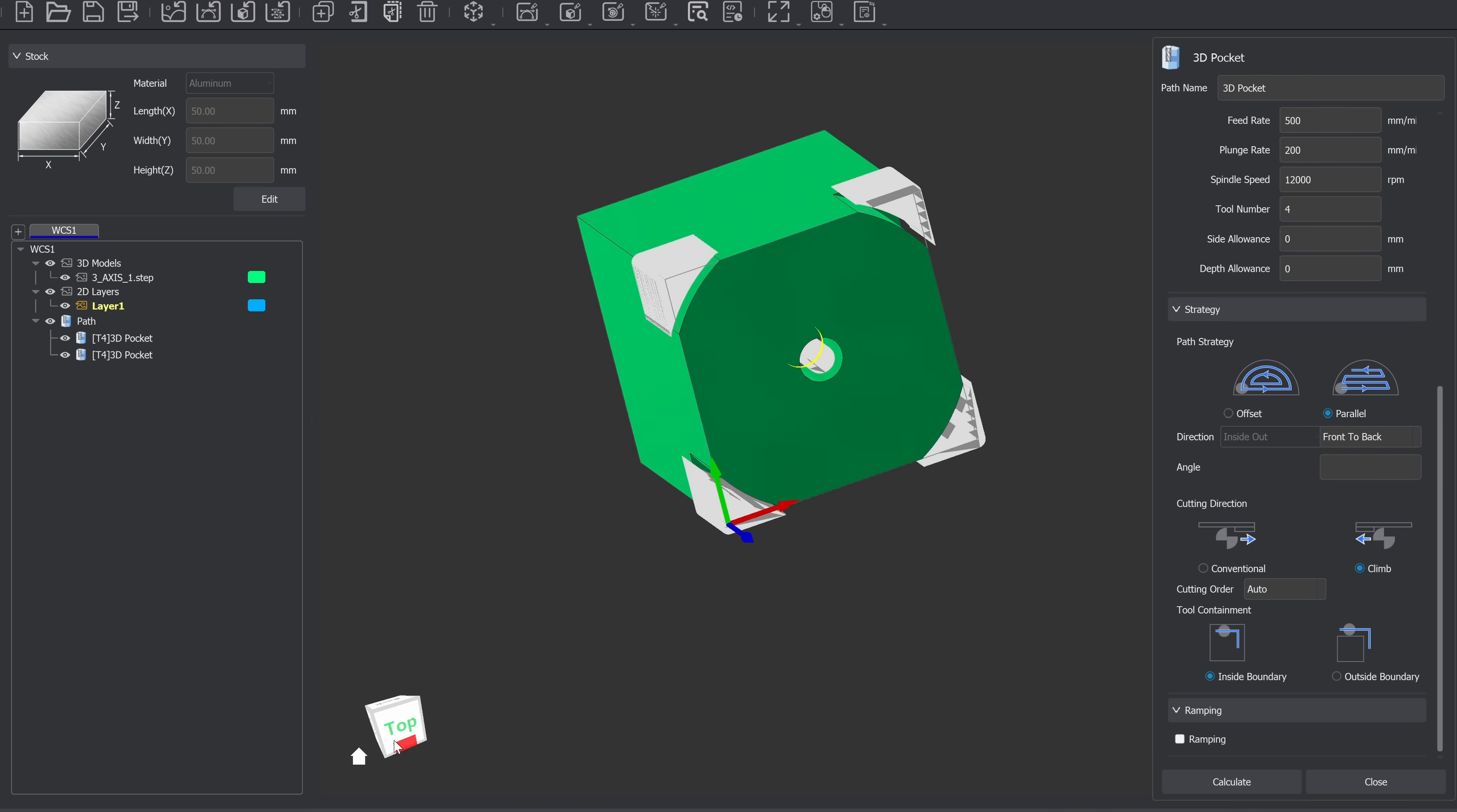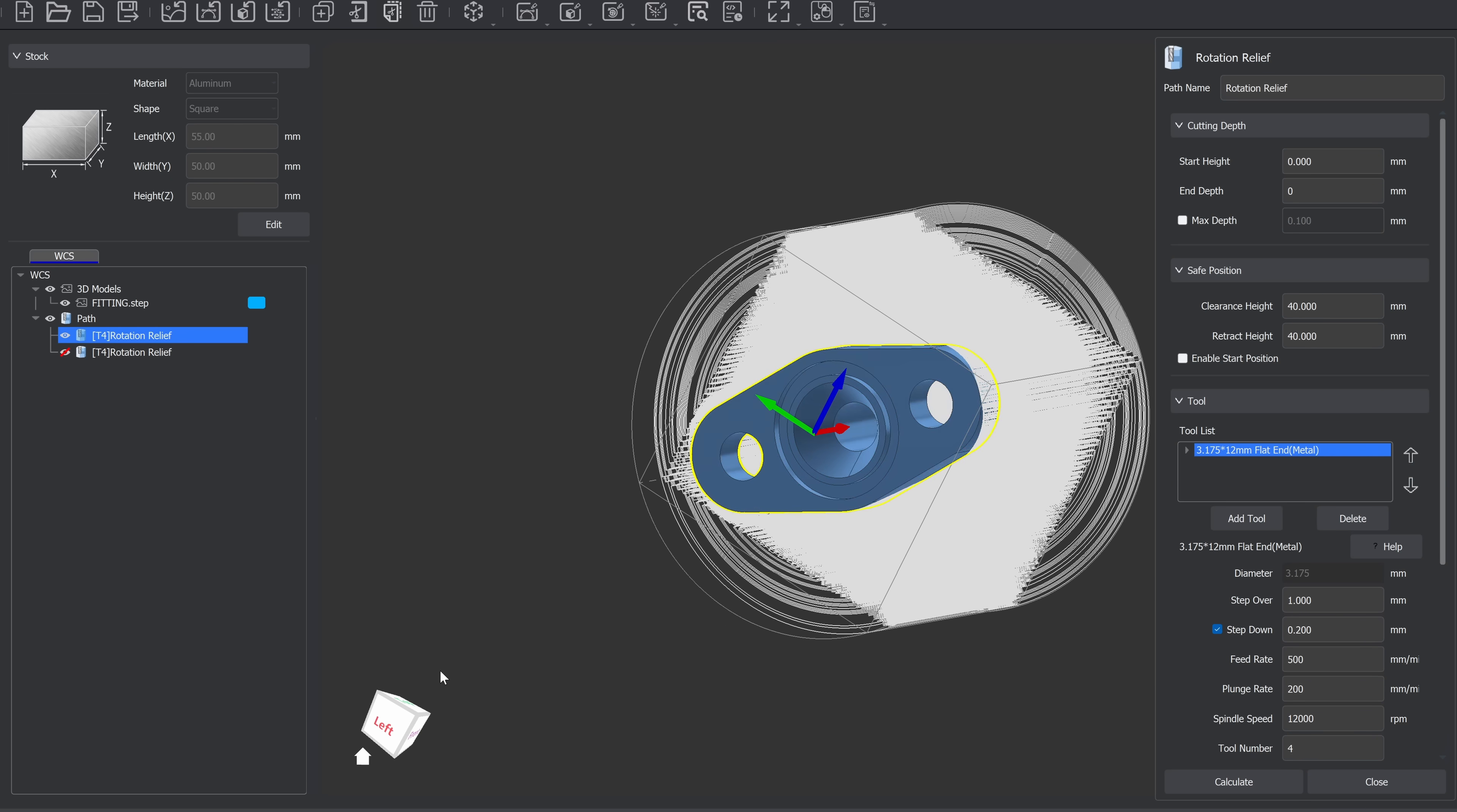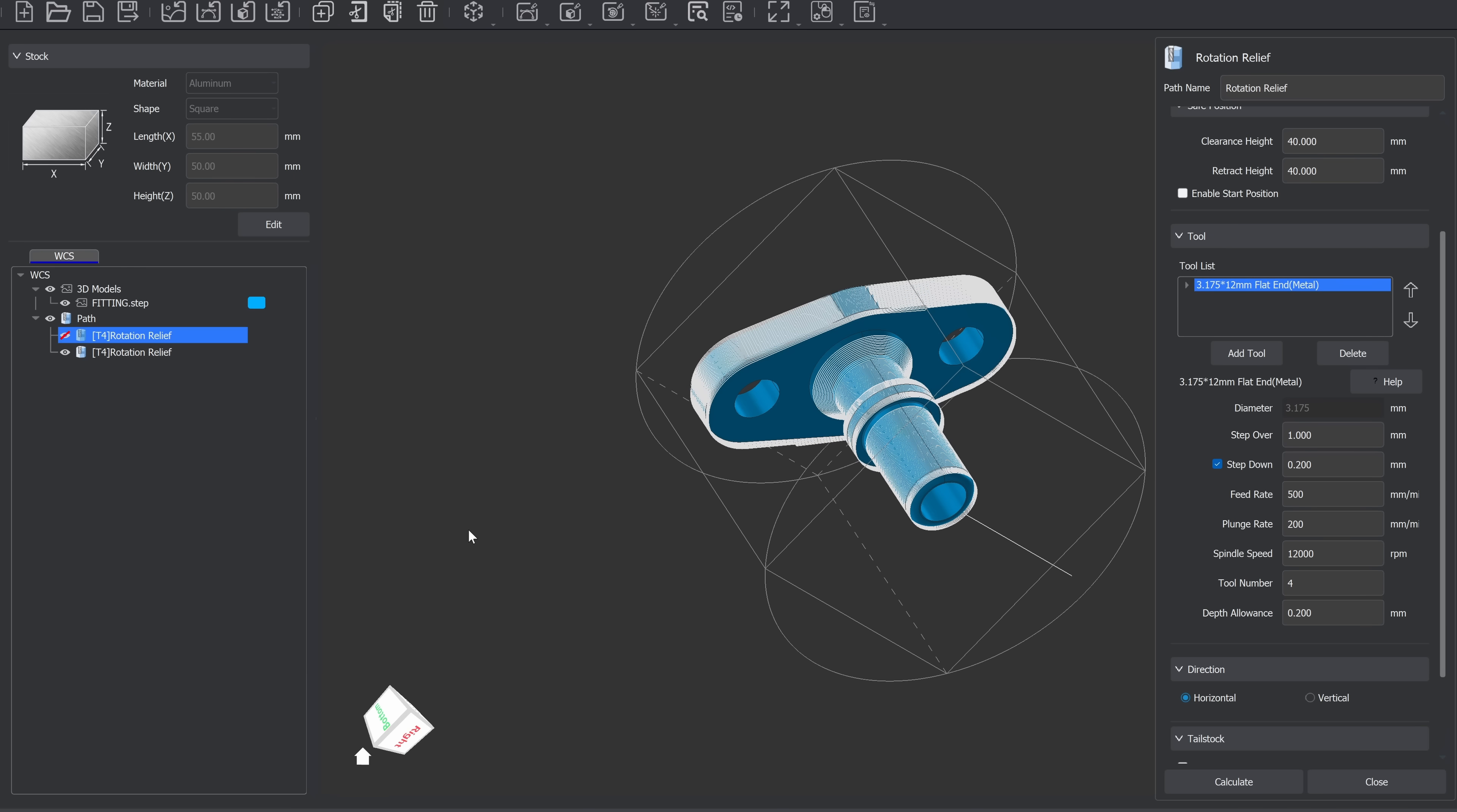For example, if I created a pocket operation, and then I wanted to create another one, and when I went to generate the path, it would say that no tool was selected, even though a tool was listed, and there's no option to click on that tool or change the tool. I had to close out of the program, reopen it, and then I'd be able to finish the operation.